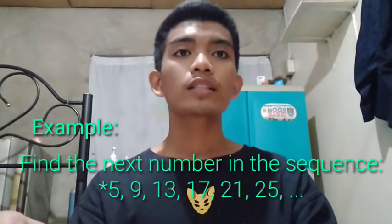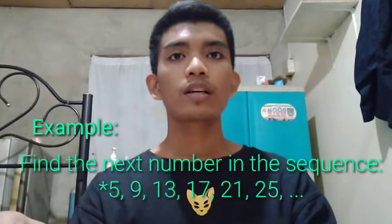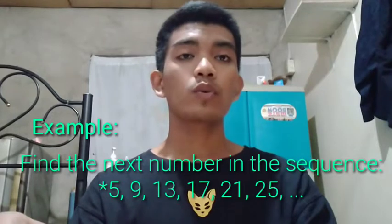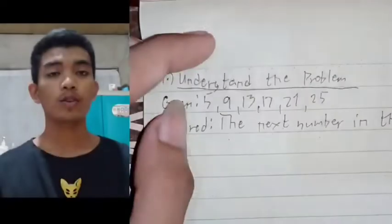Let's take this problem: find the next number in the sequence 5, 9, 13, 17, 21, and 25. So in order to solve this problem, you could use Polya's four steps in problem solving.